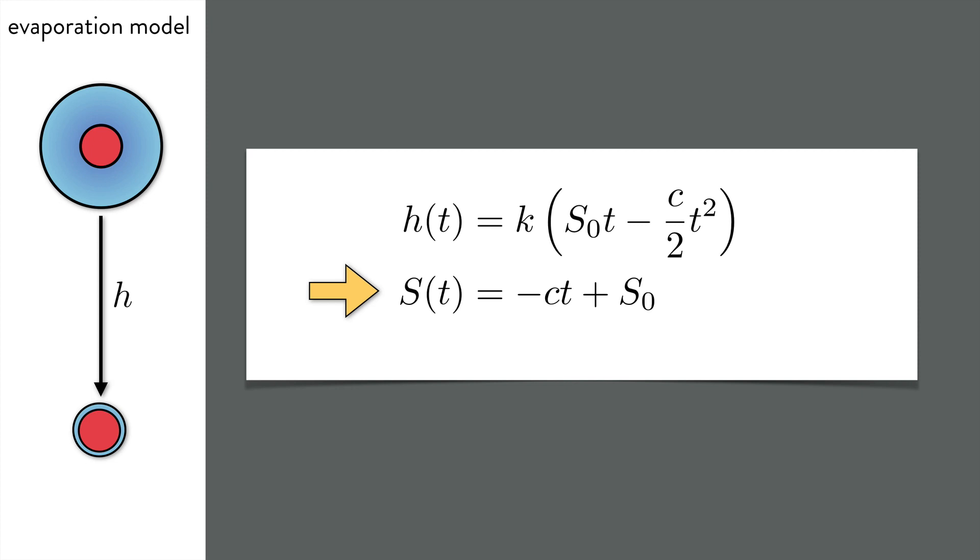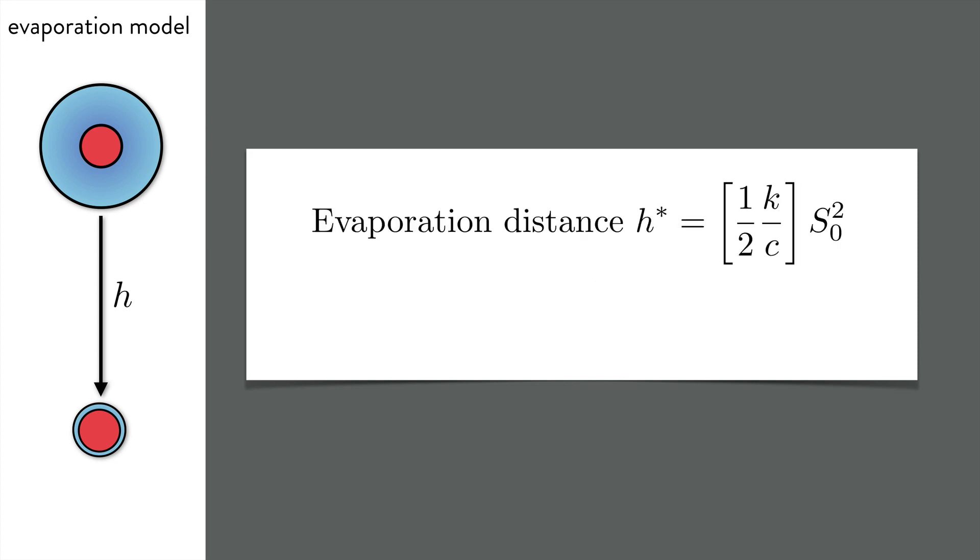If you now substitute the critical time into the first equation, you obtain an estimate for the evaporation distance, h*. Notice that this evaporation distance scales like the square of the initial surface area, s_0. So if you rewrite this in terms of the initial diameter of the droplet, you have the final punchline, which is that the evaporation distance scales like the fourth power of the diameter.